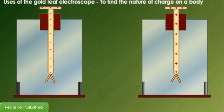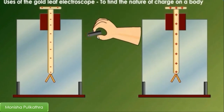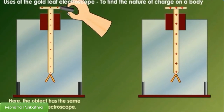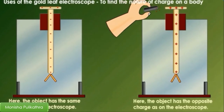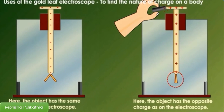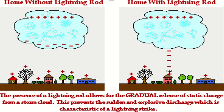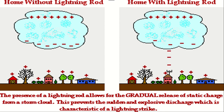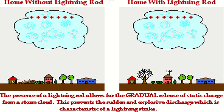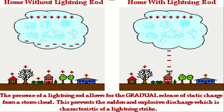Let us assume that the electroscope is negatively charged. Now bring the body to be tested close to the brass disc — if the divergence of the leaves increases, it has the same charge as the electroscope, that is negative. If the divergence of the leaves decreases, it has the opposite charge, that is positive. Additionally, the presence of a lightning rod allows for the gradual release of static charge from a storm cloud, preventing the sudden and explosive discharge characteristic of a lightning strike.